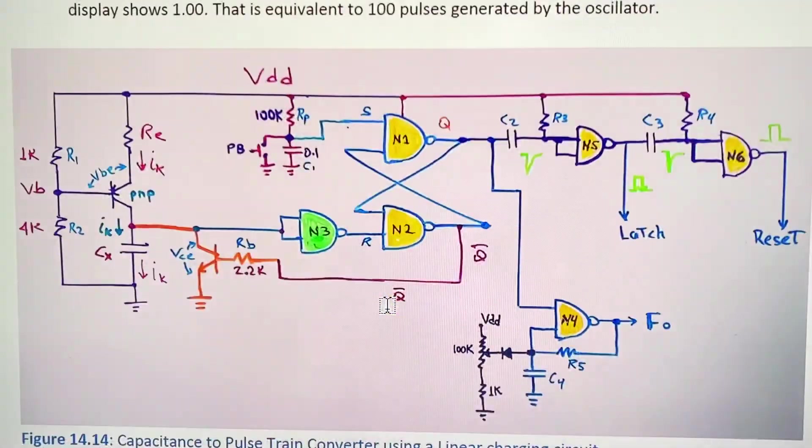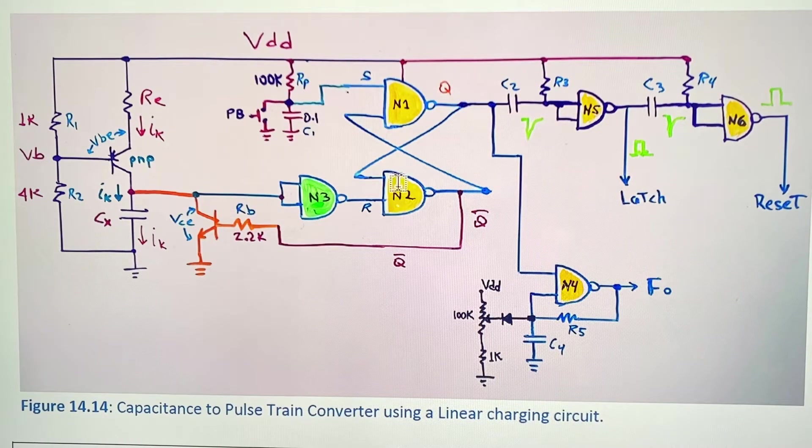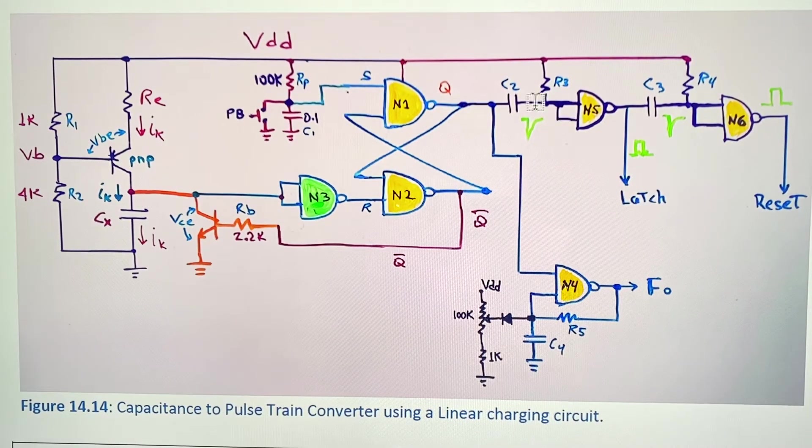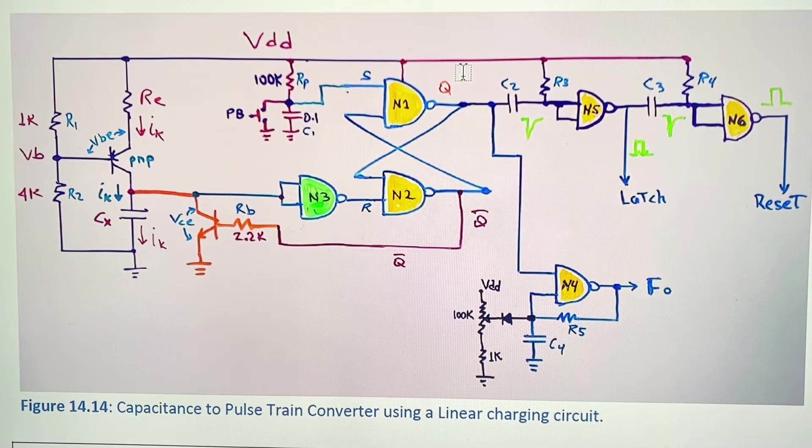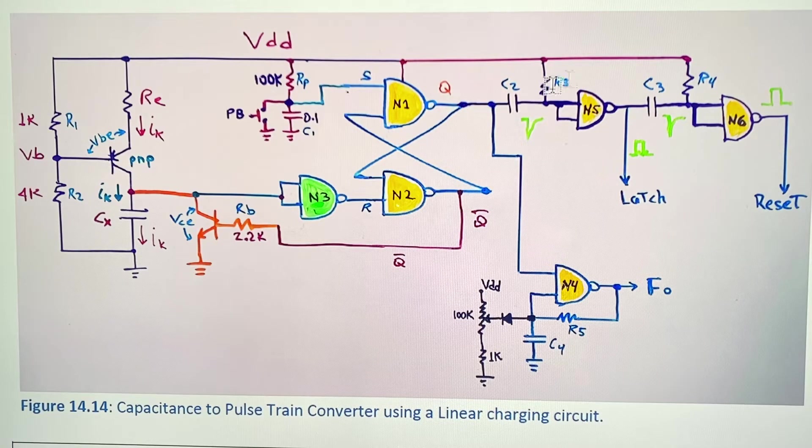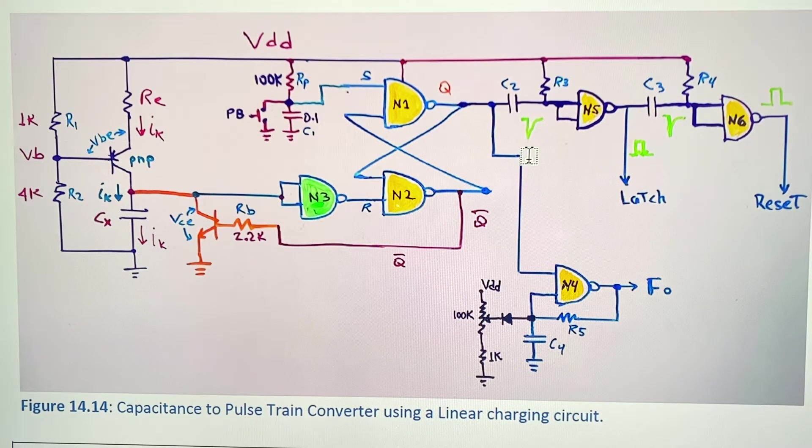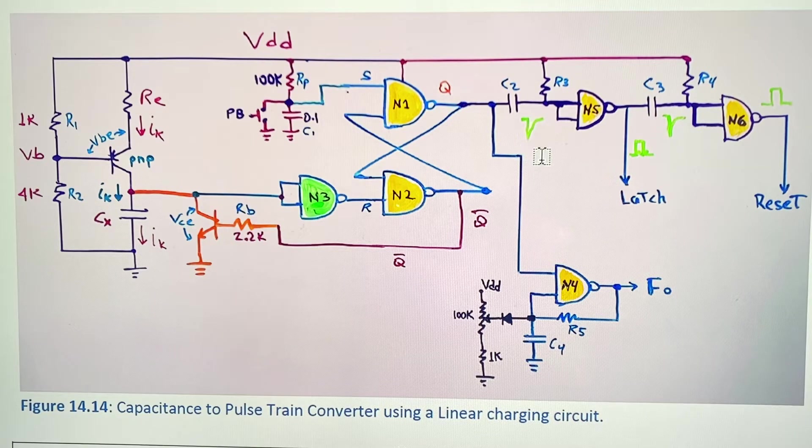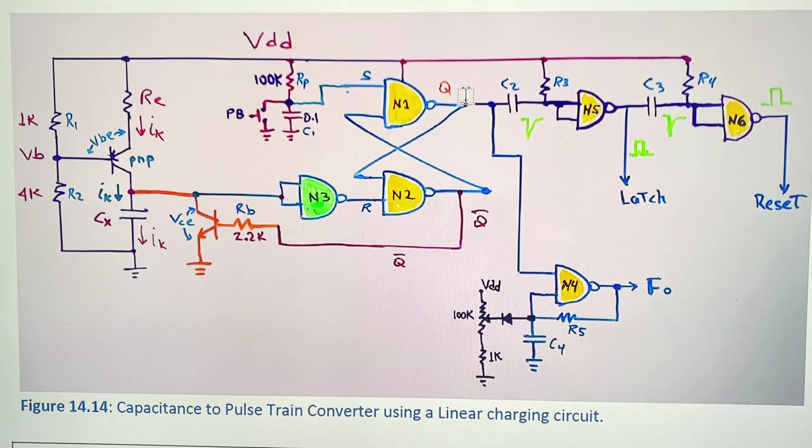Now we are adding this part. Once the Q goes from high to low logic, we have here an edge detector and this edge detector detects the falling edge of the signal.